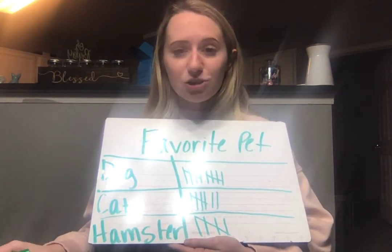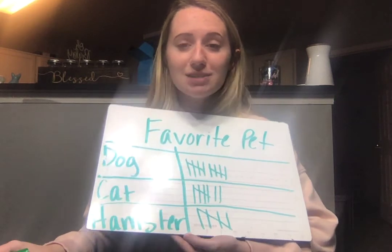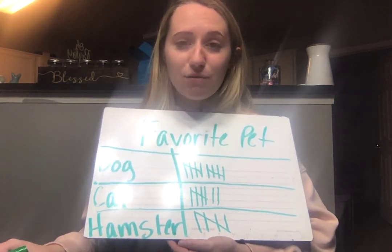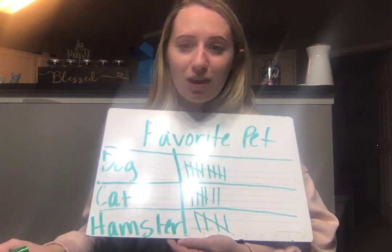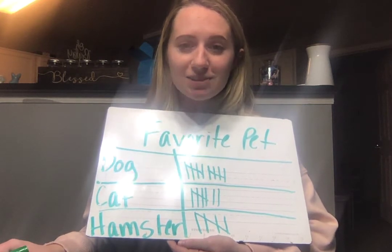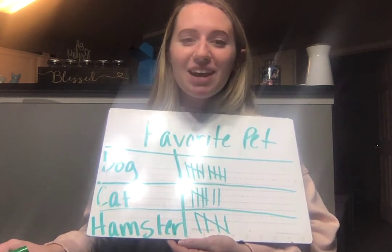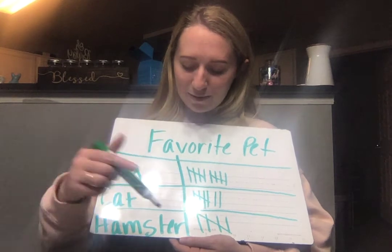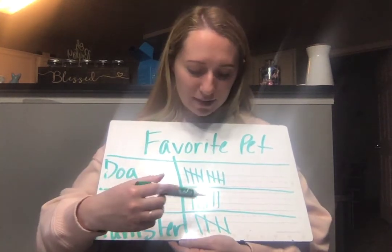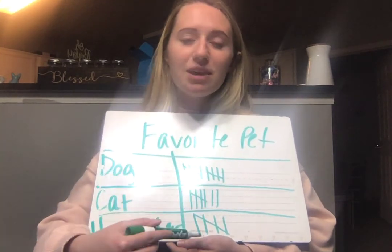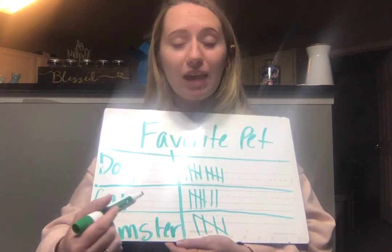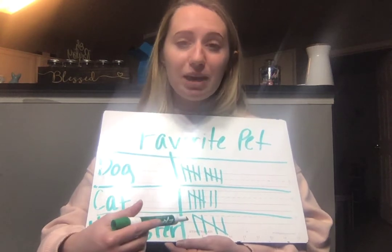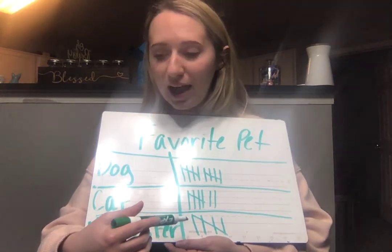Now my next question: which animal has the least amount of votes? That means the smallest. Go through and look at it. Hamster has the smallest amount of votes. So if I look at hamster, I can tell it definitely has the smallest amount of tally marks, or I could count and see — yep, hamster has the smallest number with five.